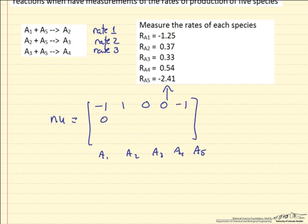And likewise if we write for the second reaction, 5 is a reactant. So this is our matrix.